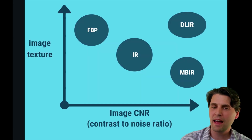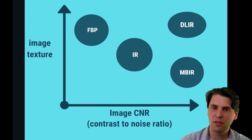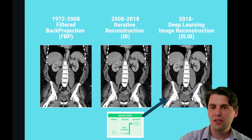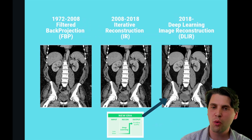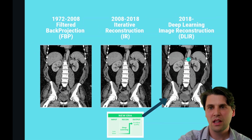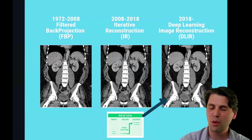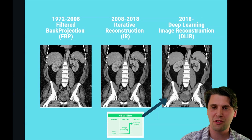Looking at the same plot, we're now filling in the question marks with our deep learning image reconstruction — that applies for both reconstruction speed and image texture. You can see here, looking at the progression in images — and I'll show you some more brain images soon — there is significant improvement in the deep learning image reconstruction images, as far as the contrast-to-noise and the image texture. We're calling 2018 until the next technology is invented the era of deep learning image reconstruction.